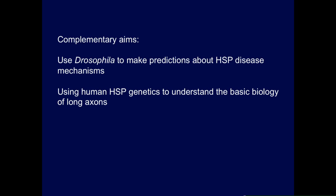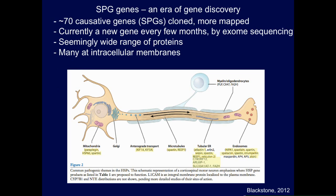The two goals really feed and support each other. To understand mechanisms, the first step is often genetics. We're now in an area of gene discovery for spastic paraplegia genes. There are around 70 causative genes cloned so far, and I lose count because a new one appears in the literature once every month or two, mainly from exome sequencing.